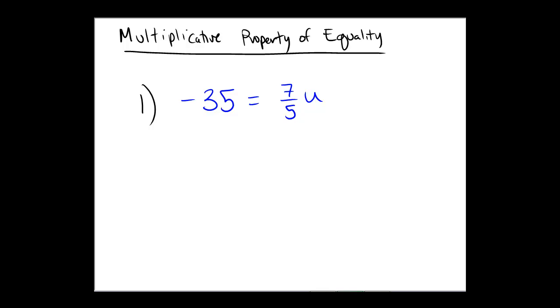So as our first example, we have negative 35 equals 7 fifths times u. Now, to unwrap our present here, we need to get rid of that 7 fifths, which is a problem.